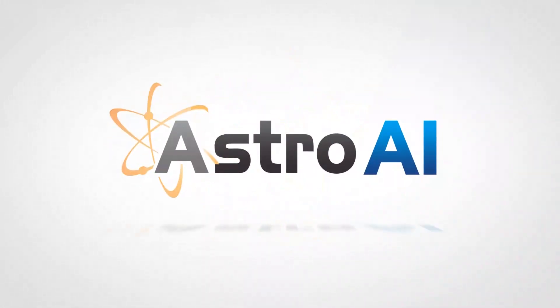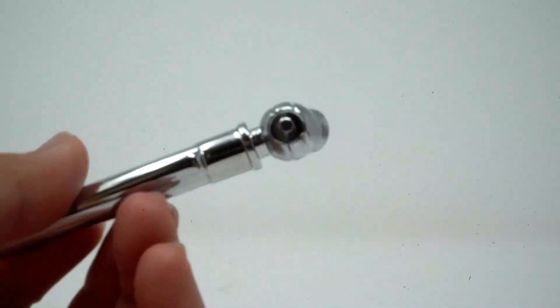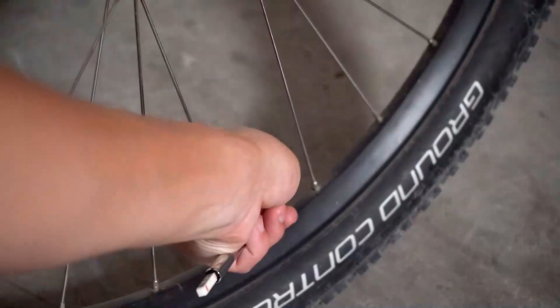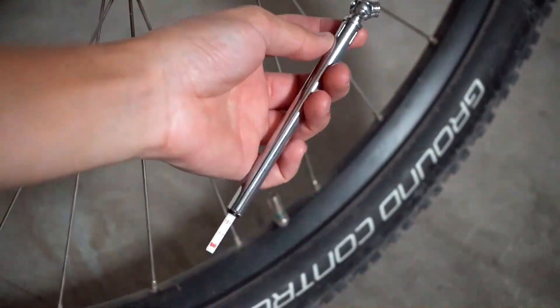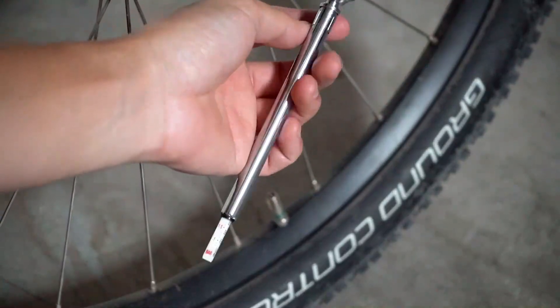Astro AI 75 PSI Pencil Tire Pressure Gauge for every occasion. Its simple design is easy for anyone to use. Just press the nozzle onto your tire's valve stem and the reading will display from the indicator bar.